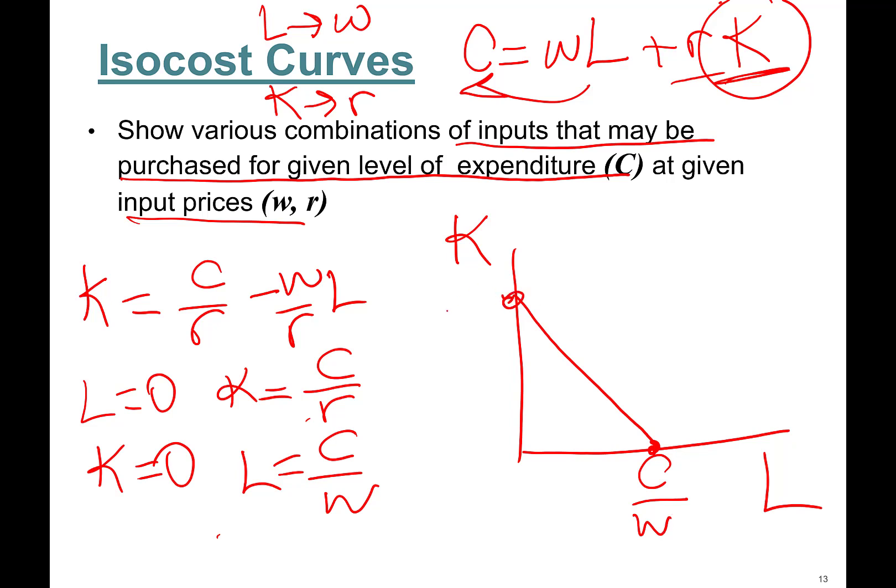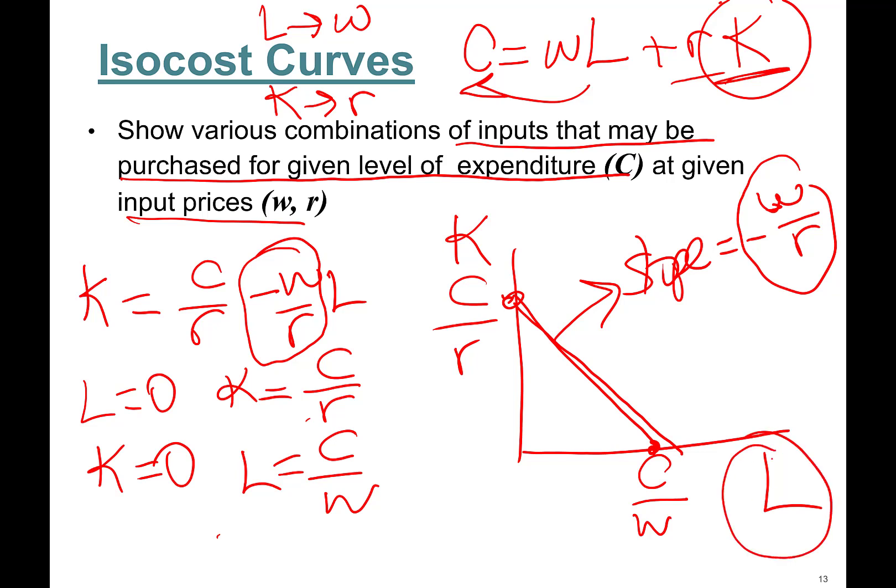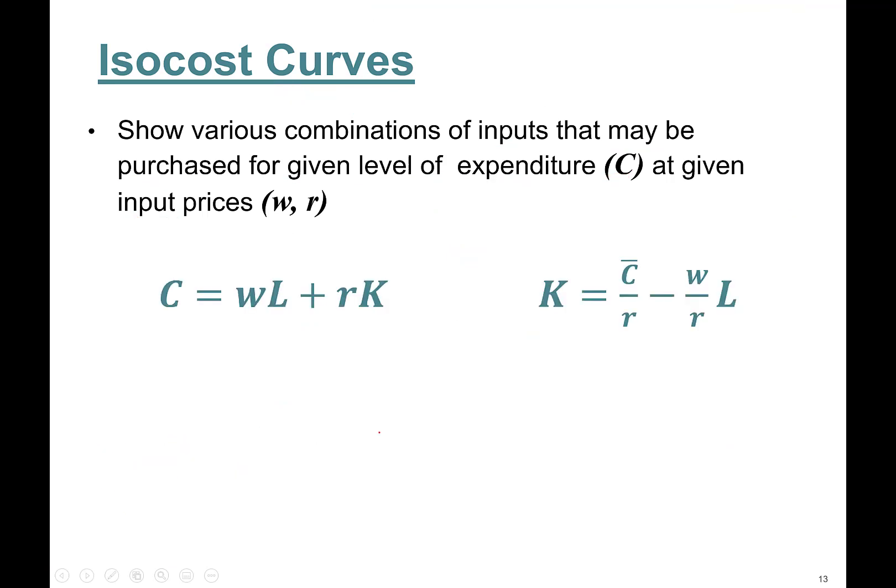What's the slope of this line? Sorry for my dog. What's the slope of this line? Slope is here: negative w over r. So it's negative, right? Downward sloping curve. Isocost: w over r, the price of whatever input you have on the x-axis divided by the price of whatever you have on the y-axis. Okay, so we learned how to draw the isocost curve.